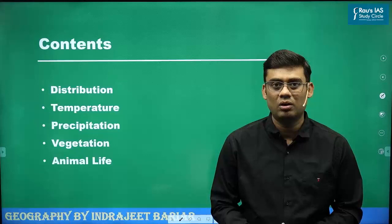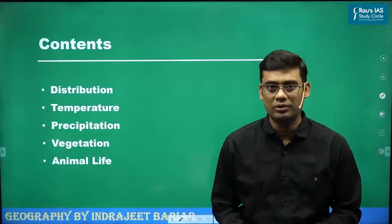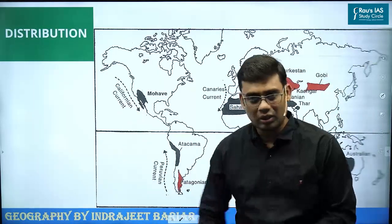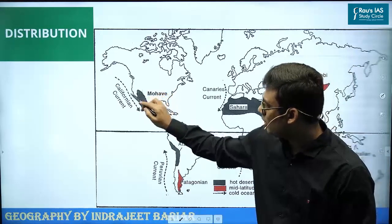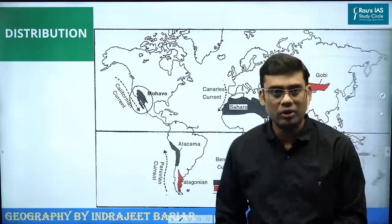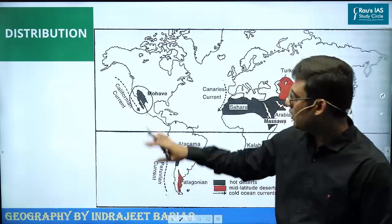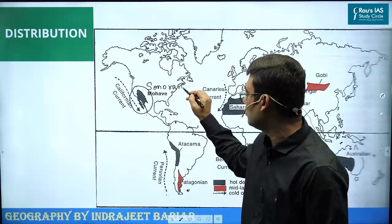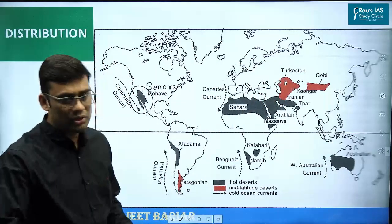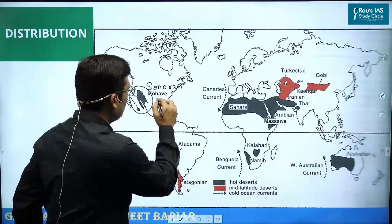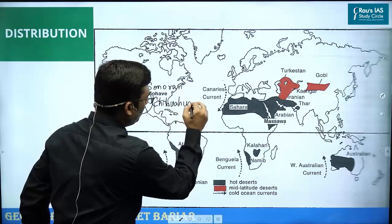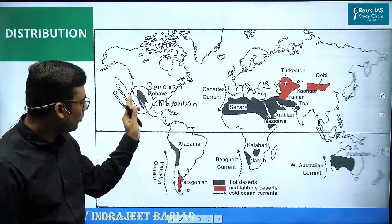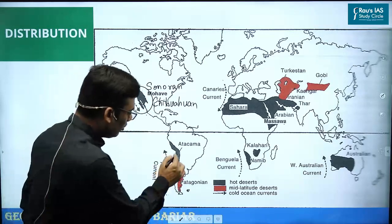First, talking about the distribution of this type of climate — the hot deserts, tropical-subtropical hot deserts — across the world. The first ones are the coastal regions of California and northern Mexico, where we find the Mojave Desert, the Sonoran Desert, and the Chihuahua Desert. These three deserts are found in North America.